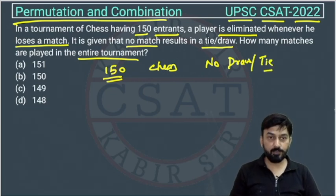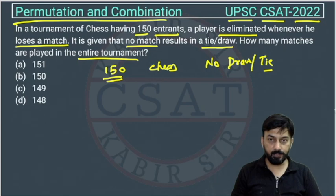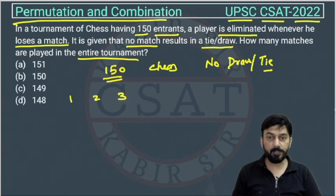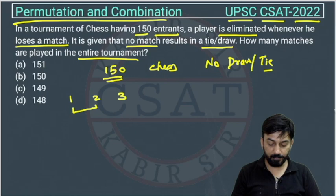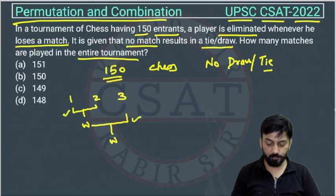This is a very easy question — you just need to know the concept. Suppose there are three players: first, second, third. One match will happen between two of them, the winner then plays the third, and then the final winner emerges. So if there are three people, how many matches happen? Two.